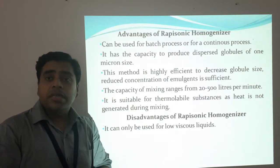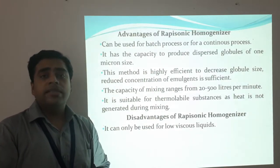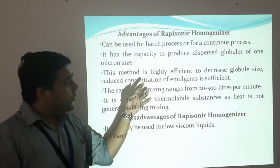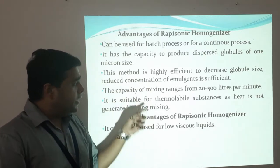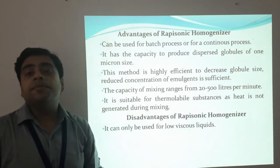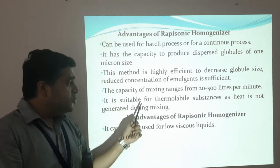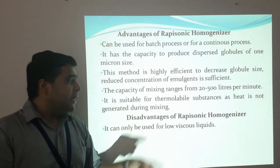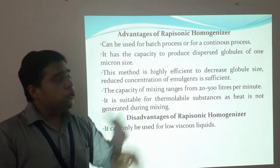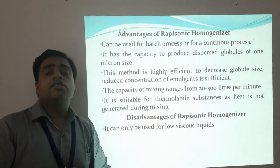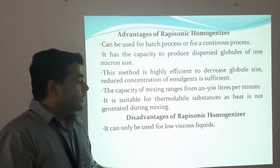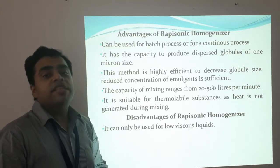It has the capacity to produce dispersed globules of 1 micron size. The method is highly effective at decreasing globule size, and a reduced concentration of emulsifier is sufficient. The capacity of mixing ranges from around 20 to 500 liters per minute. It is suitable for thermolabile substances as heat is not generated during mixing, and it is routinely used in pharmaceutical industries for emulsification purposes. The disadvantage is that it is ideal only for low-viscosity liquids.